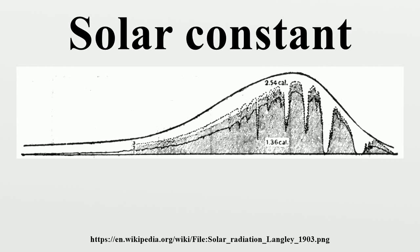The solar constant, a measure of flux density, is the conventional name for the mean solar electromagnetic radiation per unit area that would be incident on a plane perpendicular to the rays